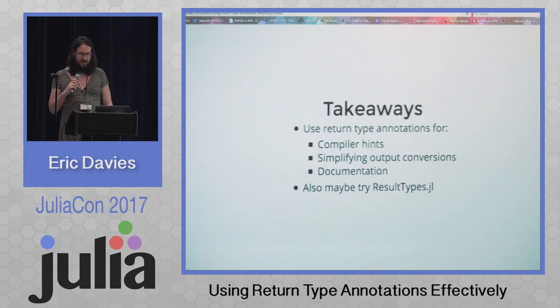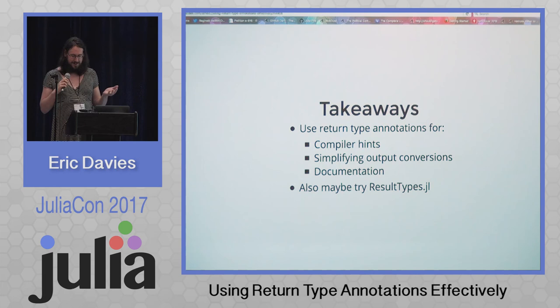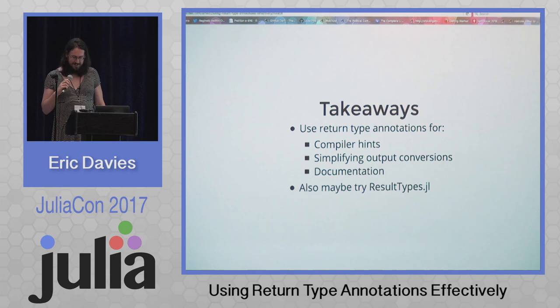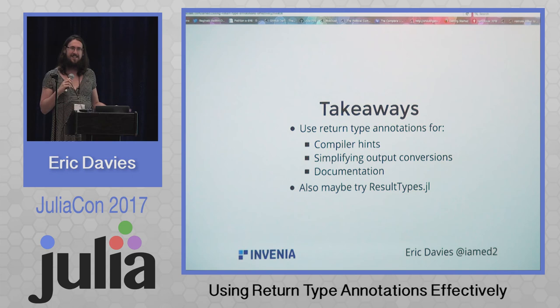Takeaways: return type annotations are good for compiler hints, simplifying output conversions especially with multiple return statements, and good for documentation. Maybe use ResultTypes if you think it might be good for you. And in conclusion — that's me, that's my company. We are a sponsor of JuliaCon and we're hiring. Thank you.